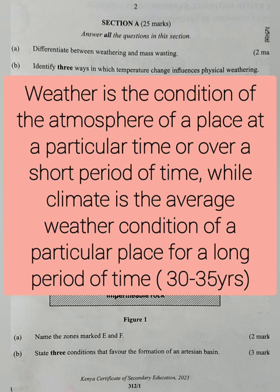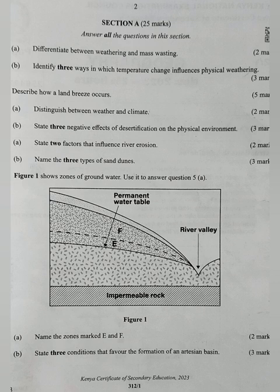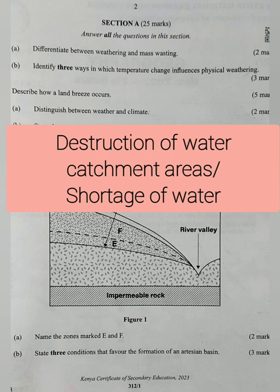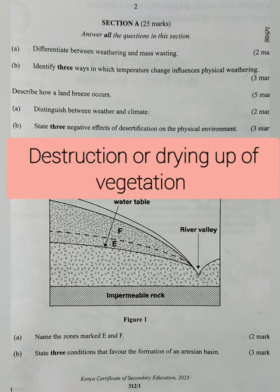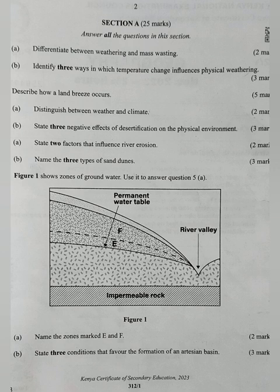Question 3B: state three negative effects of desertification on the physical environment. Number one, it leads to destruction of water catchment areas, which can lead to shortage of water. Number two, it can lead to destruction or drying up of vegetation. Number three, it can lead to drying up of wells or even development of infertile soils.